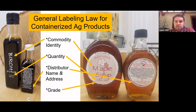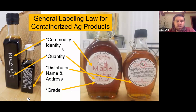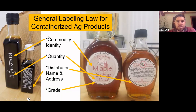You also need to have the grade on the label — for example, dark color, robust taste. As long as you're not producing a very large quantity (the cutoff is based on monetary value), you don't have to have a nutrition facts panel on a smaller scale.